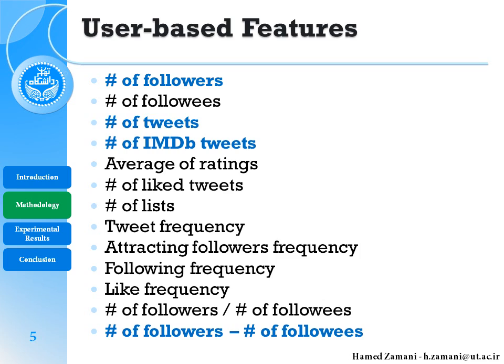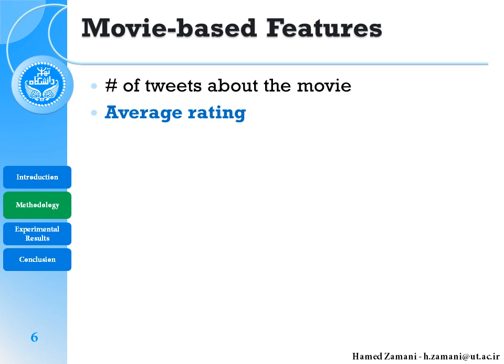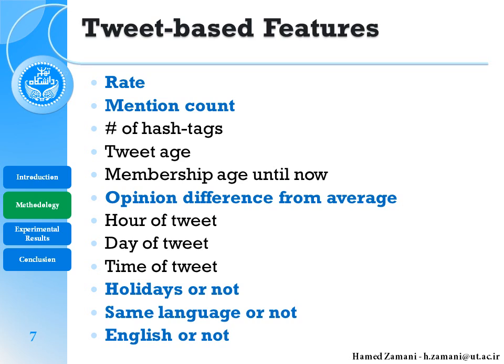The movie-based features are the smallest group — there are only two features and one of them is selected after feature selection, which is the average rating of the movie. The tweet-based features have more features selected in this group. For example, the rating of the movie that the user applied, and mention count. There are also three binary features: holiday or not, same language or not, and English or not — and all of the binary features are selected as discriminative features after feature selection.